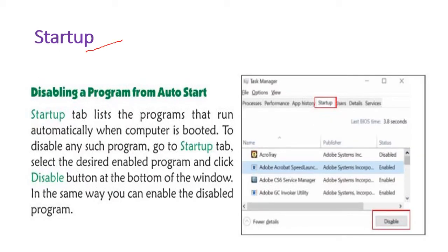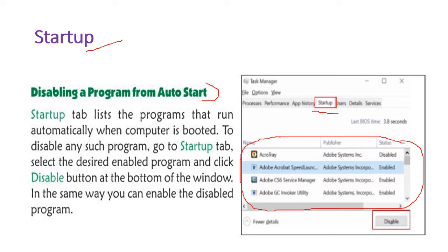The next tab is Startup. From the Startup tab, you can see all the programs that run automatically when the computer starts. To disable any such program, go to the Startup tab, select the desired enabled program, and click the Disable button. You can see the Enable and Disable options, and you can disable any unwanted startup program from here.